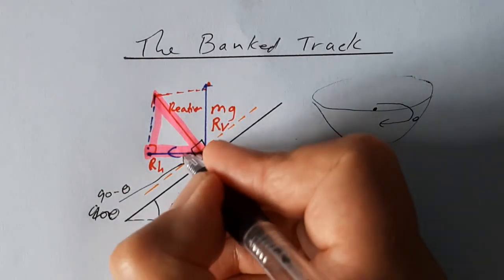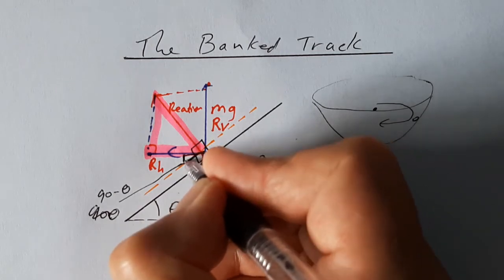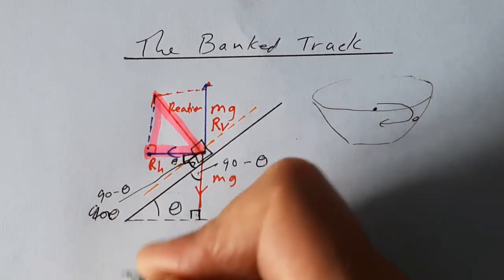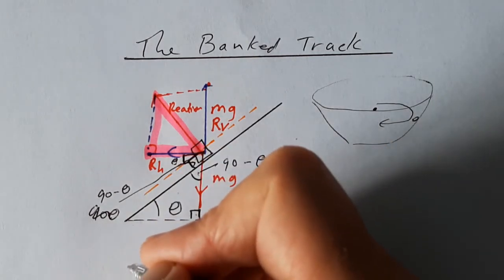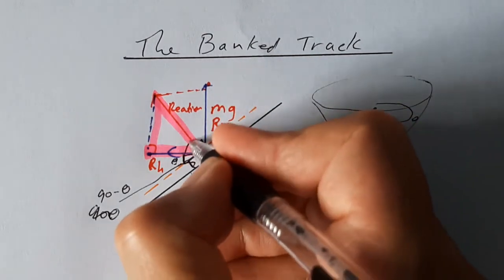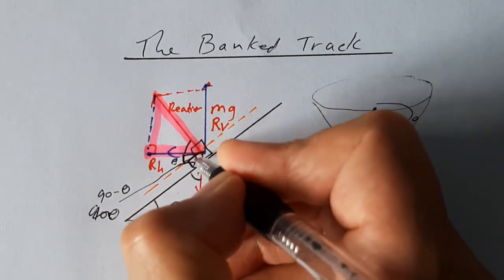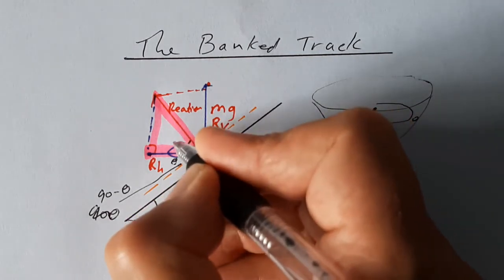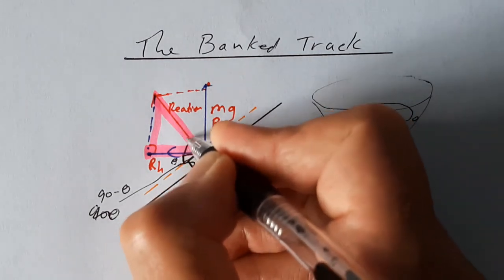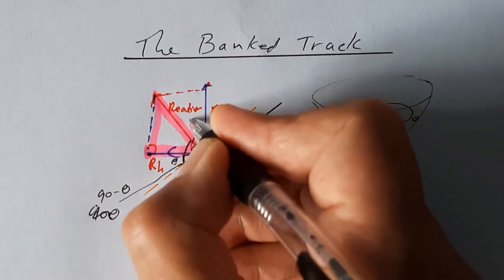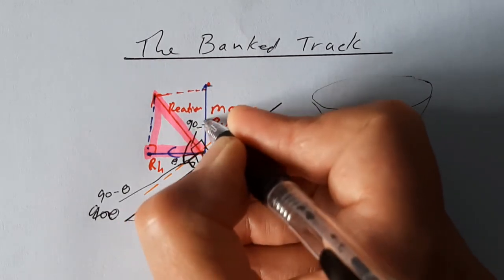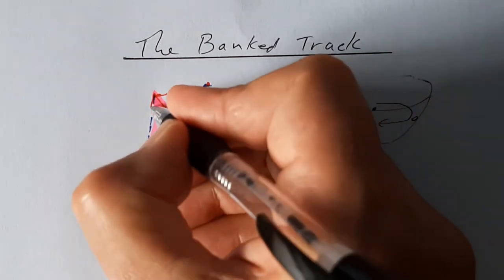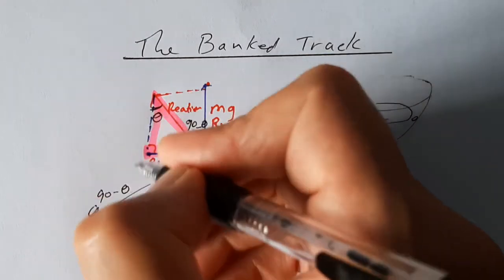That makes this angle here that I was trying to draw before theta. Makes that angle there, because the orange dotted line and the red line are at right angles. So that angle there is 90 minus theta. So that angle there is theta.